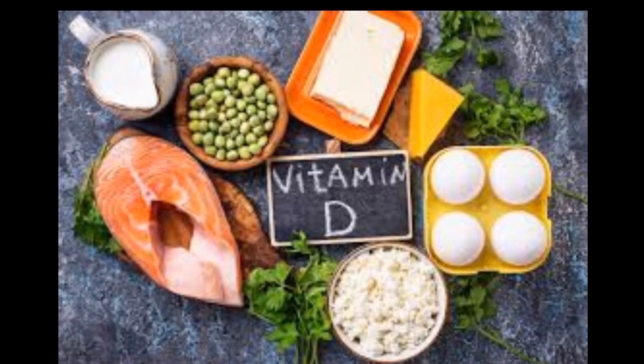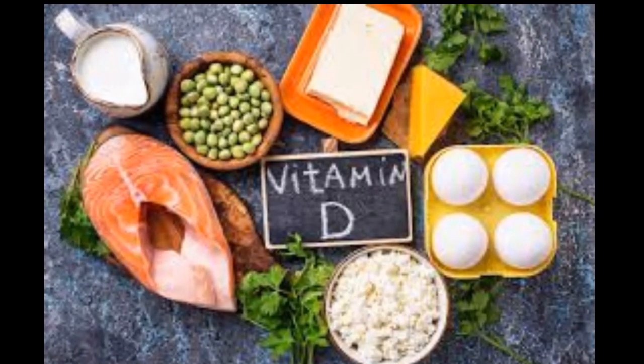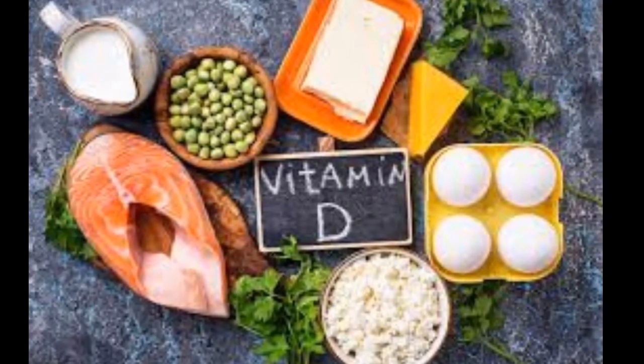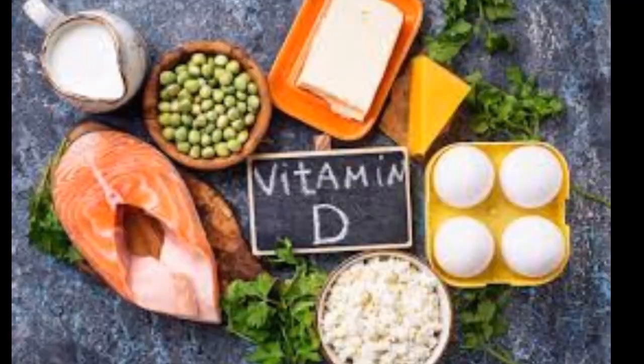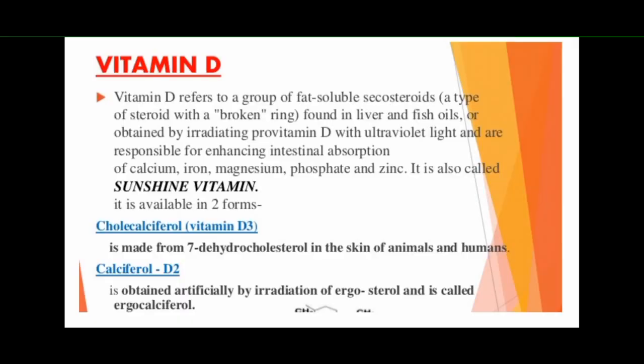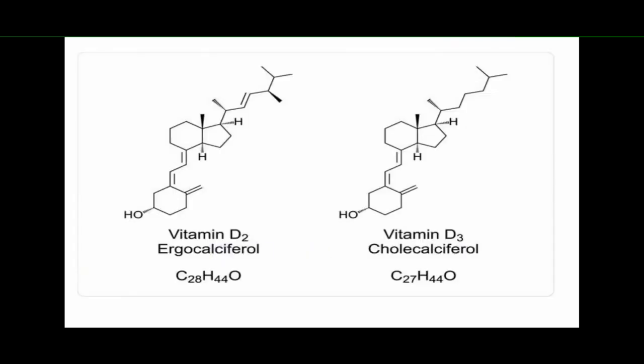Welcome to Life Sciences with Jyotishree. In this module we will be discussing about vitamin D, which is a fat-soluble vitamin that resembles sterols in structure. There are two major physiologically relevant forms: vitamin D2 (ergocalciferol) and vitamin D3 (cholecalciferol). These are not much biologically active, but they are metabolized identically in the body and converted into active forms. In the intestine, bile is essential for absorption, and through lymph, vitamin D enters the circulation bound to plasma alpha-2 globulin and is distributed throughout the body.